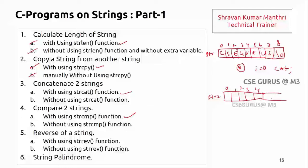How to copy these things? Simply by iterating. Can I say it is str2 of i equals str1 of i? This is one simple logic you can say. That means what happens: c will be copied here, s here, e here, g here, u here, r here.